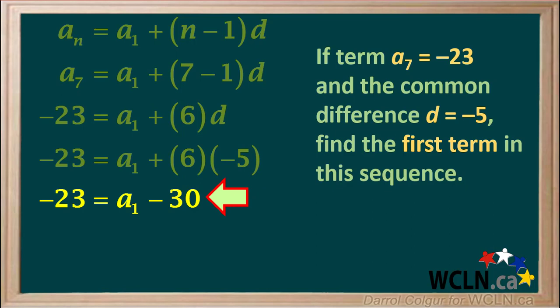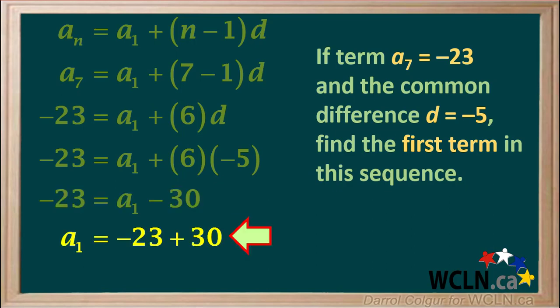We can solve for a1 by adding 30 to both sides of the equation, giving a1 equals negative 23 plus 30. Negative 23 plus 30 equals positive 7. So the final answer is the first term a1 in this sequence is 7.